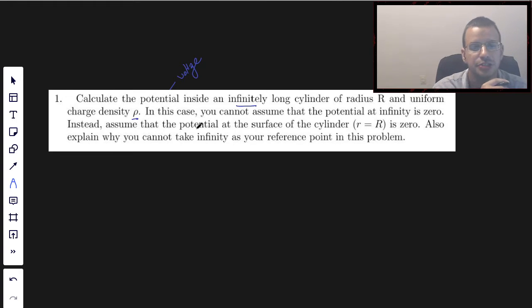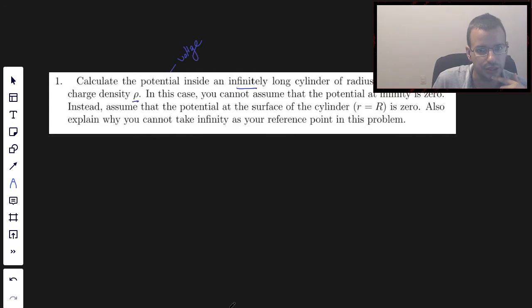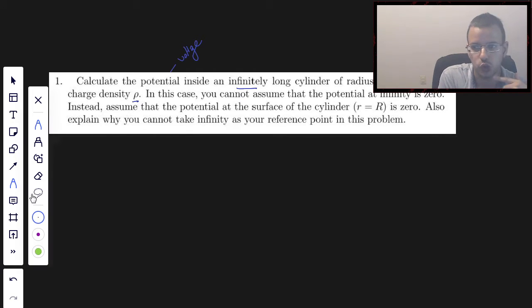In this case, you can now assume that the potential at infinity is zero, instead of assuming the potential at the surface of the cylinder is zero. Also explain why you cannot take infinity as your reference point. Okay, so you want to find the voltage of the cylinder. So first start by drawing a picture, because that's pretty much what we do every time, always.